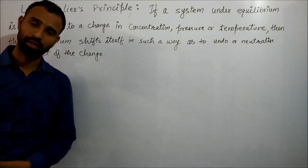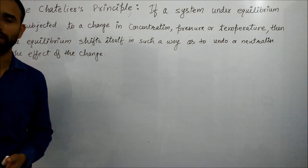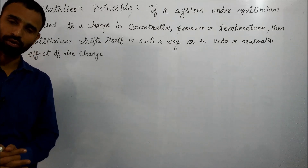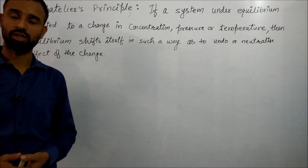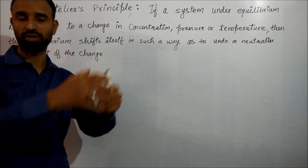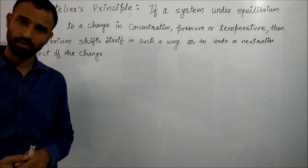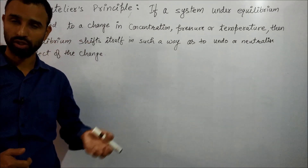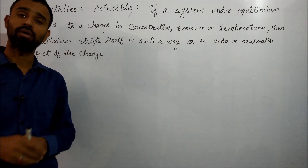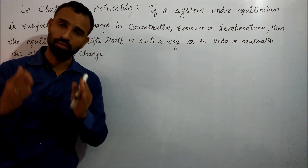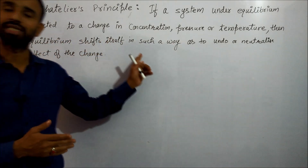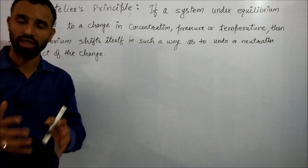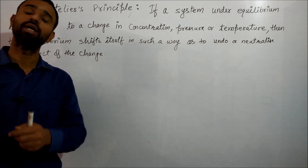Le Chatelier's Principle was given by Le Chatelier and Brown in 1884. According to this principle, if a system under equilibrium is subjected to a change — whether we change the concentration of reactant or product, change the temperature, change the pressure, or add some inert gas — then equilibrium shifts itself in such a way as to undo or neutralize the effect of the change.